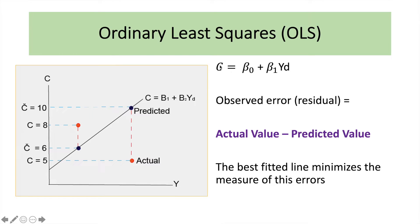Here you can see that we have consumption. Consumption equals beta 0, which is the intercept — here is the intercept on the line. Plus beta 1, which is the slope. And we have YD here, assuming it's disposable income. So what are we doing in this model? Let's say we have two individuals, and we have recorded their consumption and their income. We call these the actual values — the orange color dots.